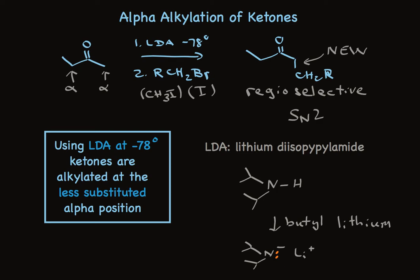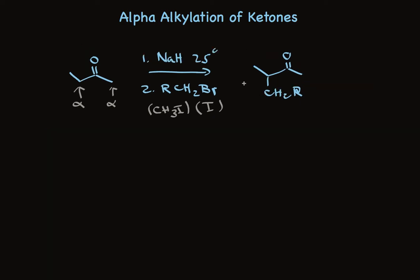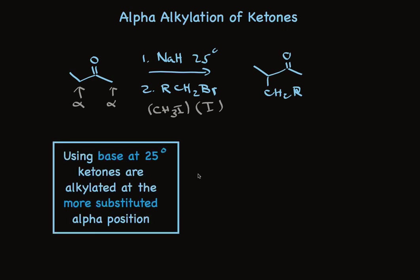This selectivity is great, but we might want to alkylate at the more substituted position. Other conditions let us do that selectively. Using sodium hydride at room temperature, followed by the same kind of alkylating agents, we get alkylation at the other alpha position — the more highly substituted one. Again, good yields are obtained. So our take-home message is: using base at 25 degrees, essentially room temperature, ketones are alkylated at the more highly substituted alpha position.